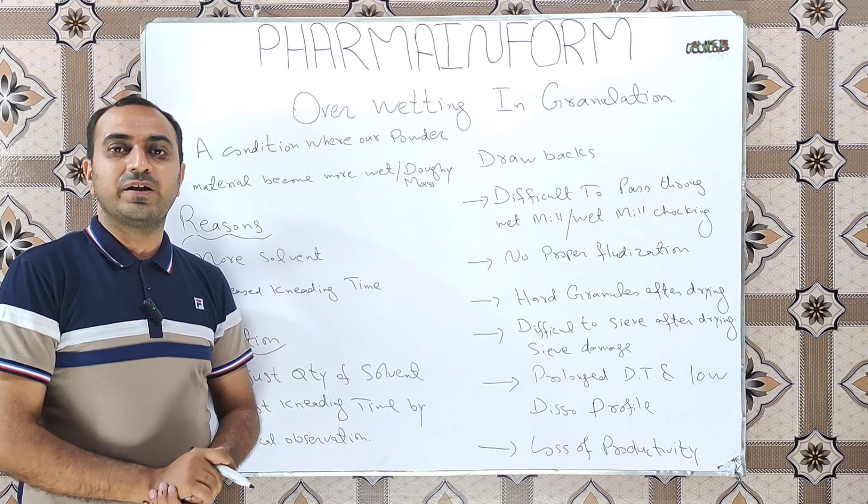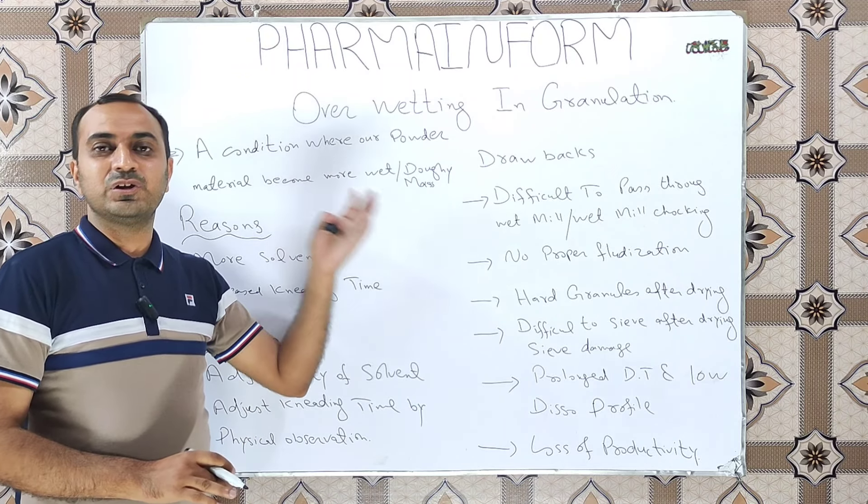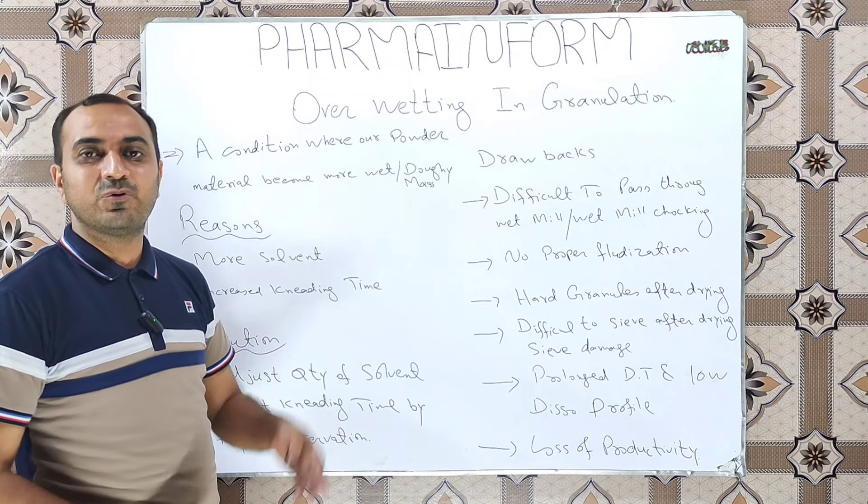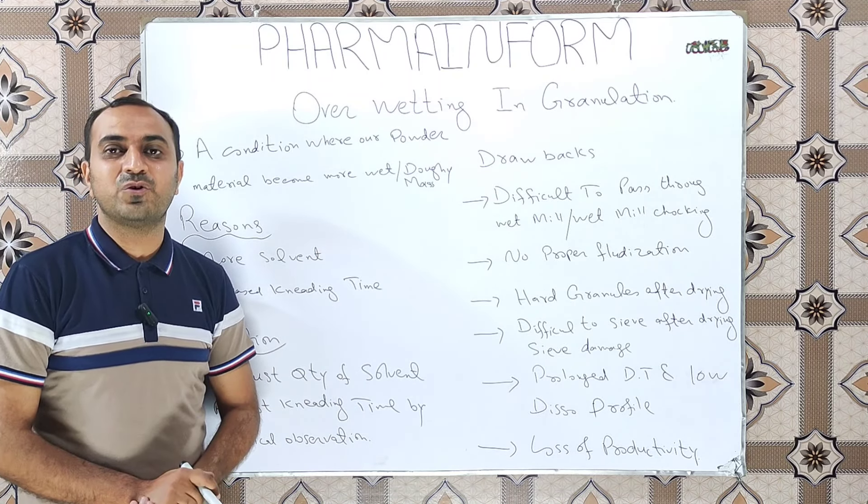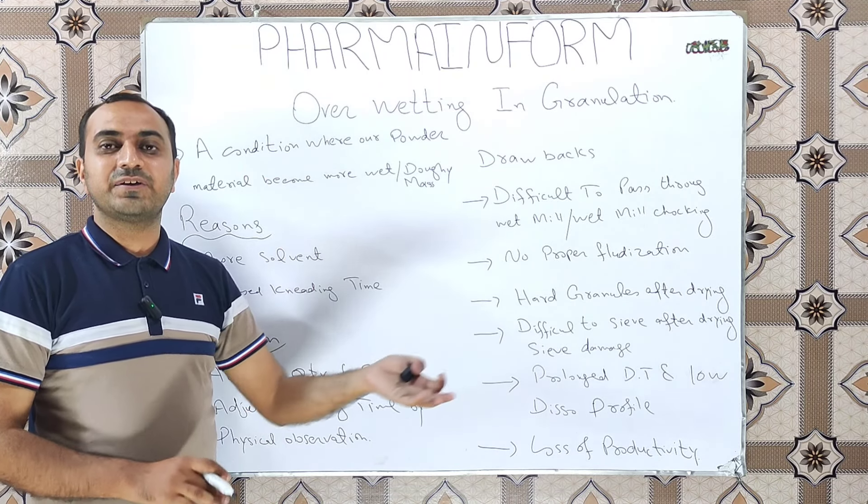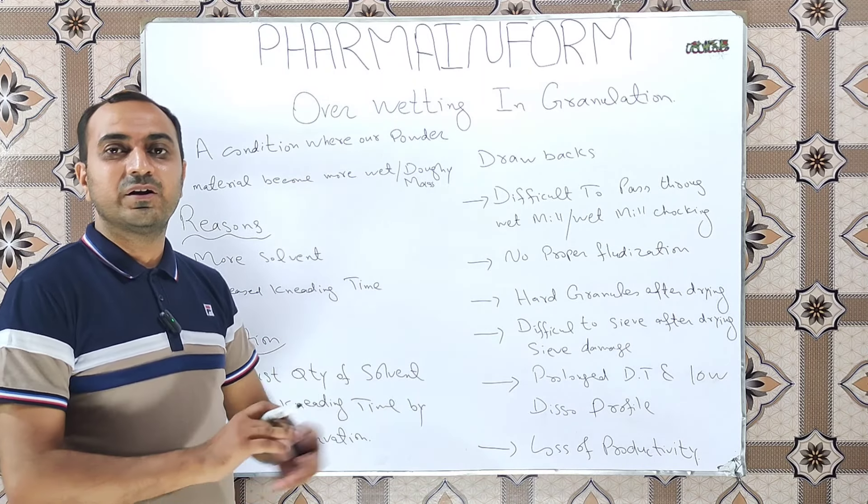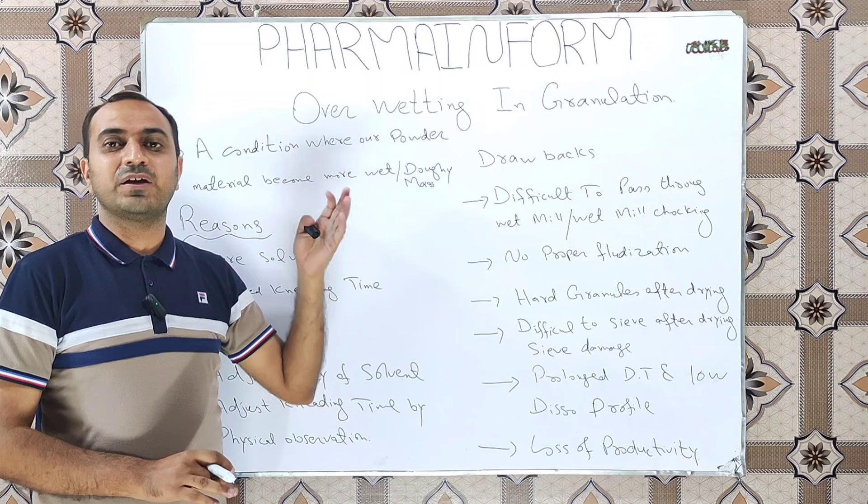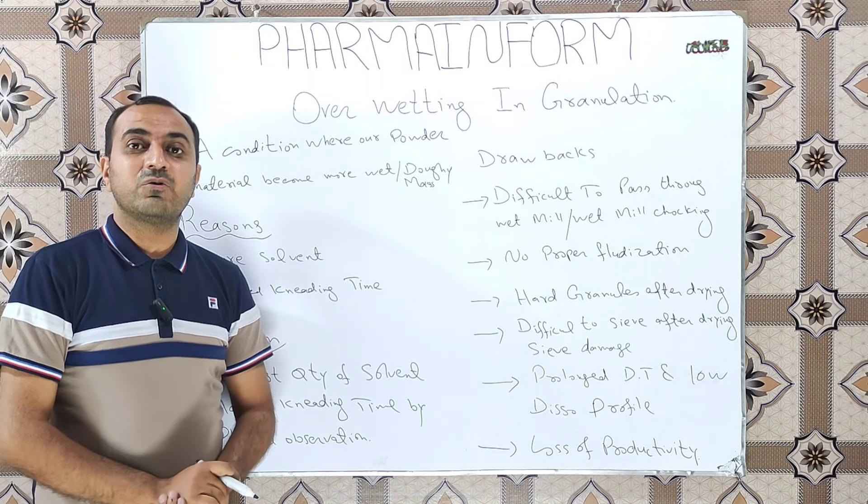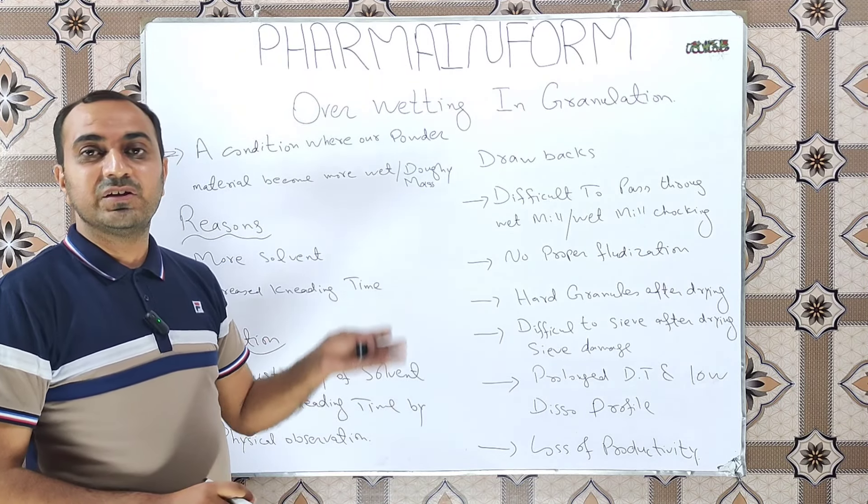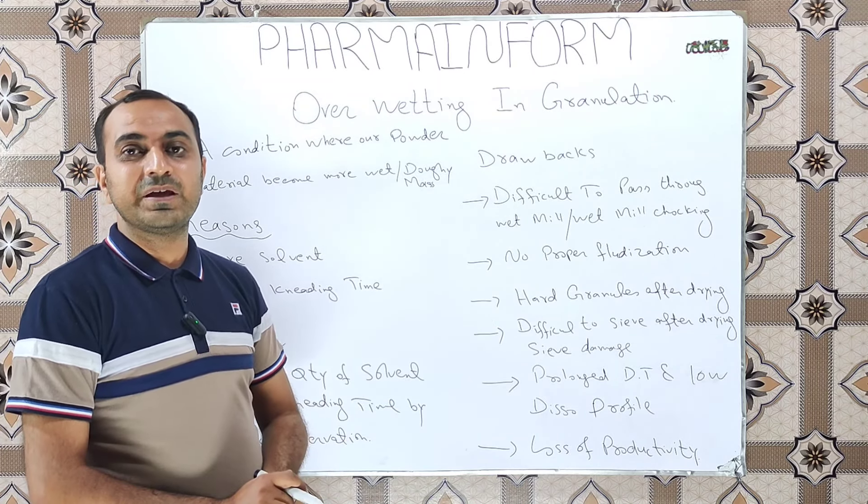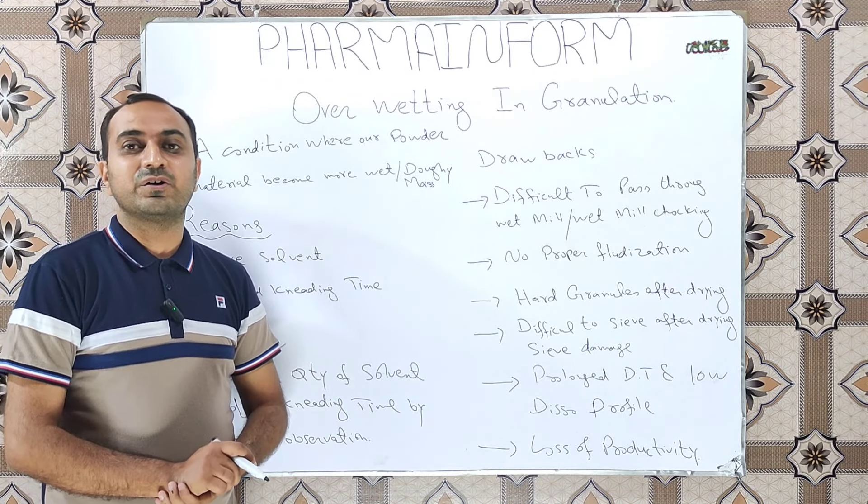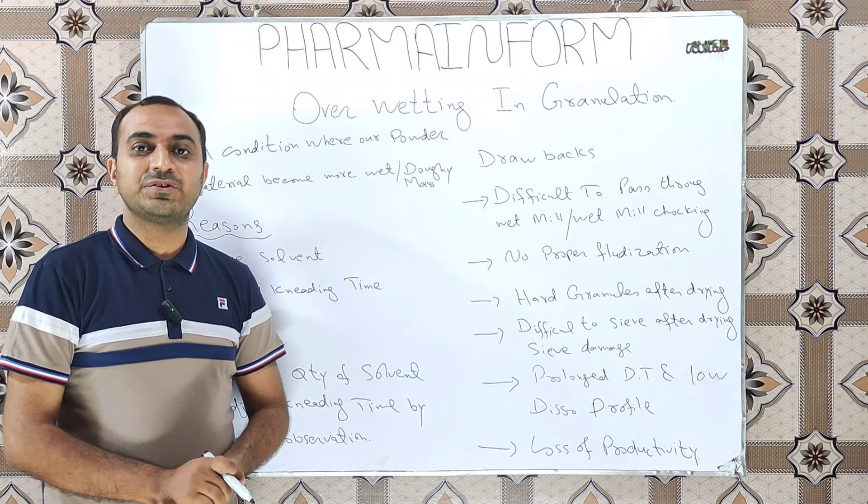One most important point: overwetting is usually observed during manufacturing of the first batch of a new product because we have no historical data for the usage of solvent for large-scale manufacturing. It may also occur due to manufacturer or source change of the API or excipient because the solvent quantity may vary due to the change of manufacturer. So we should critically observe the quantity of solvent added in the validation batches.